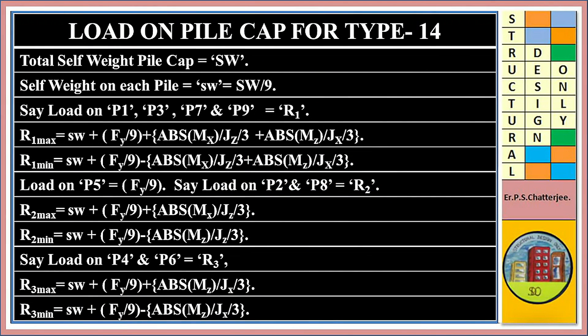Load on pile cap for Type 14: total self weight equals SW (capital). Self weight on each pile equals sw (small) equals total SW divided by 9. Load on corner piles P1, P3, P7, and P9 equals R1. R1 maximum equals sw plus Fy/9 plus |Mx|/Jz divided by 3 plus |Mz|/Jx divided by 3. R1 minimum uses minus signs for the moment terms.